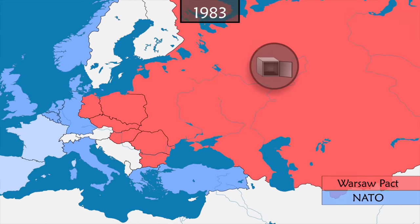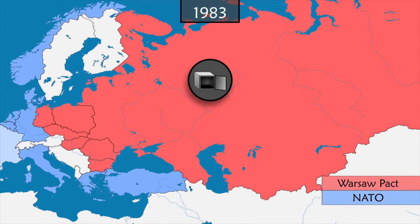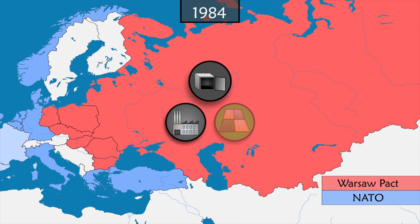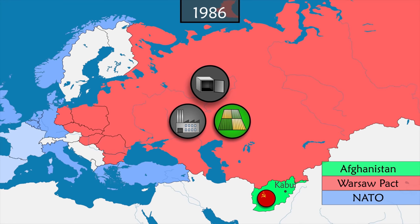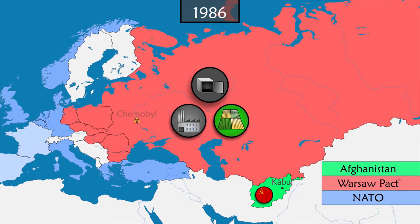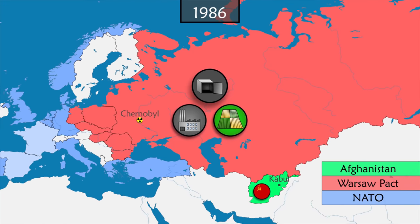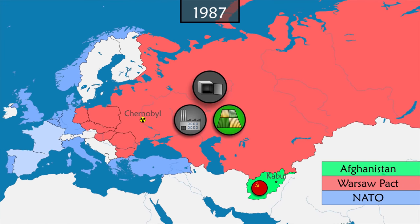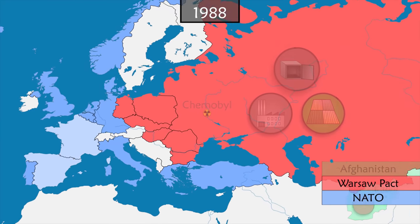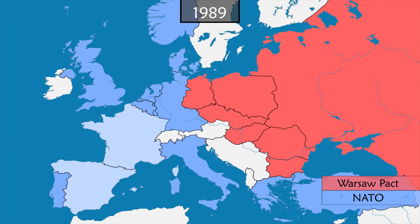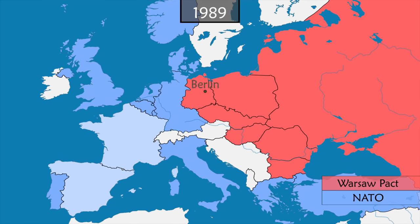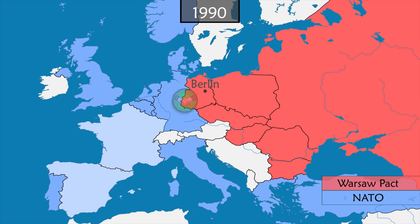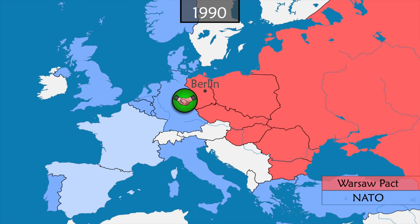In the USSR, the economic situation is catastrophic — industrial and agricultural production stagnate while the country is bogged down in a costly war in Afghanistan. After the Chernobyl nuclear incident of 1986, the USSR is weakened and loses control in Eastern Europe, where pro-Soviet governments fall one by one in 1989.